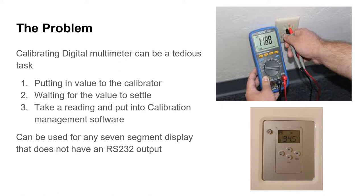The problem that we're trying to address is as a calibration technician, a lot of the time you have to calibrate digital multimeters. You have to take a calibrator, then set the calibrator for a value which outputs a voltage, and the multimeter will then display that voltage.